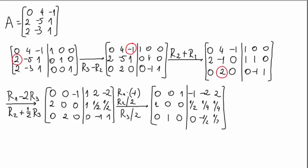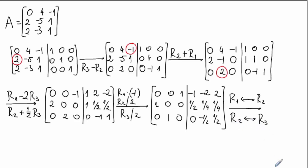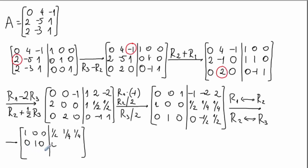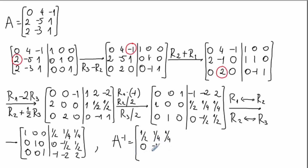The very last step is to interchange the rows so that the identity matrix appears properly on the left. The first row moves down to the third position, and the second and third rows shift up by one position, with R1 moving into R2 and R2 moving into R3. Whatever appears on the right side after all these operations is the inverse matrix we were searching for.